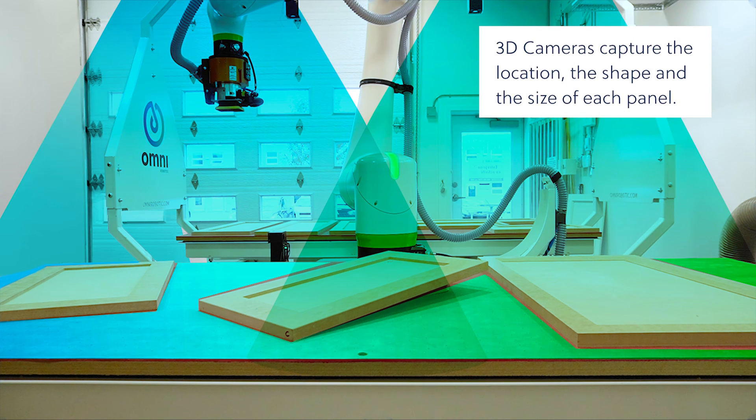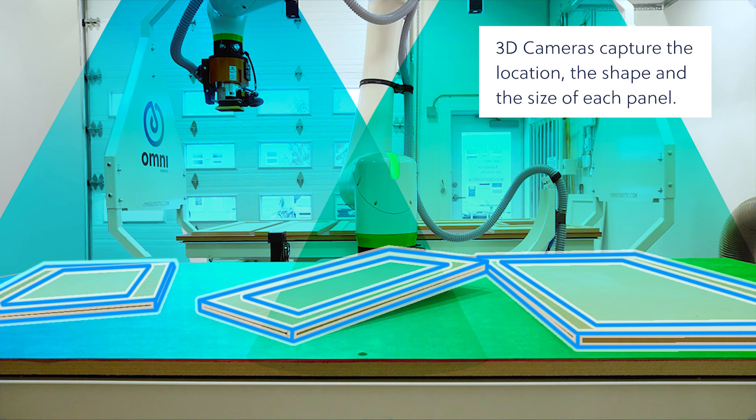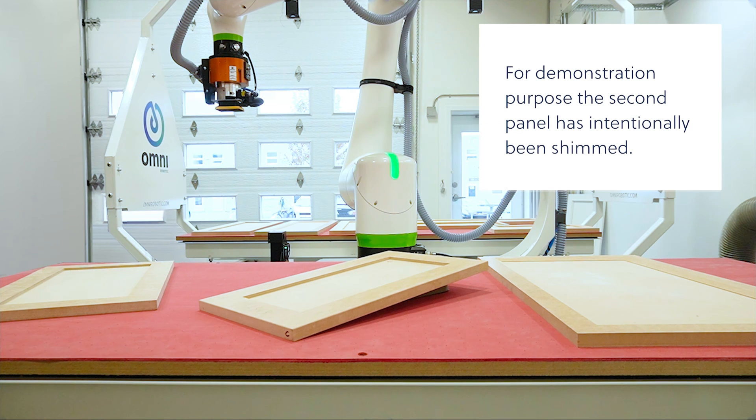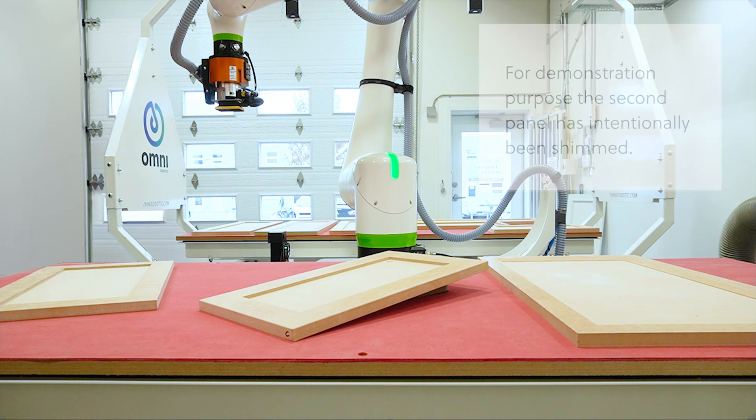3D cameras capture the location, the shape, and the size of each panel. For demonstration purposes, the second panel has intentionally been shimmed.